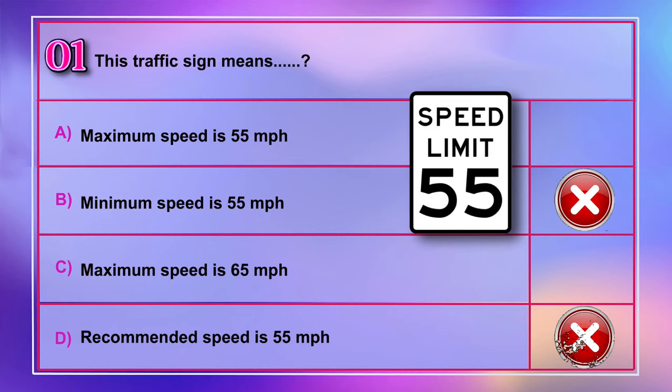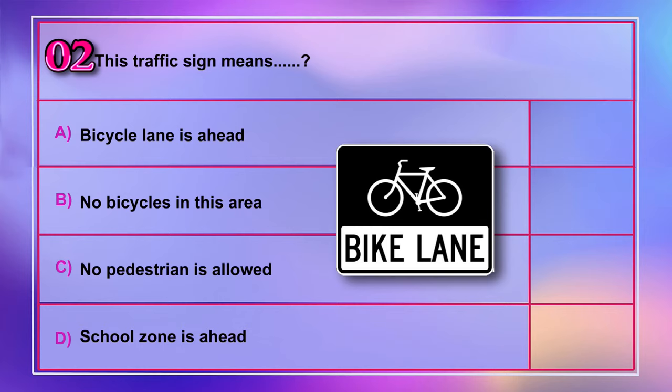Question number 2: This traffic sign means A) bicycle lane is ahead, B) no bicycles in this area, C) no pedestrian is allowed, D) school zone is ahead. Correct answer is A: bicycle lane is ahead.